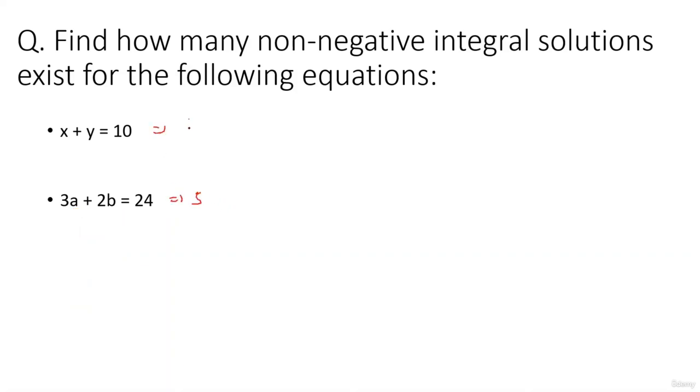Next question: 11p plus 2q equals 30. So p you take 0, 2 into 15 is 30, that is the first solution. Now next solution comes when you take p as 2. 11 times 2 is 22, so q is 4. These are the only possible two solutions because if you increase the value of p further, q becomes negative, which is not possible.